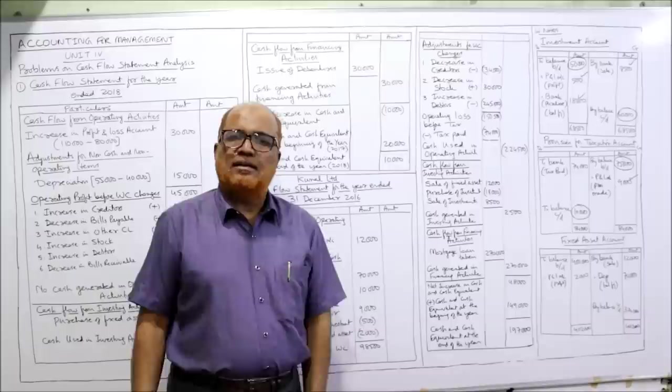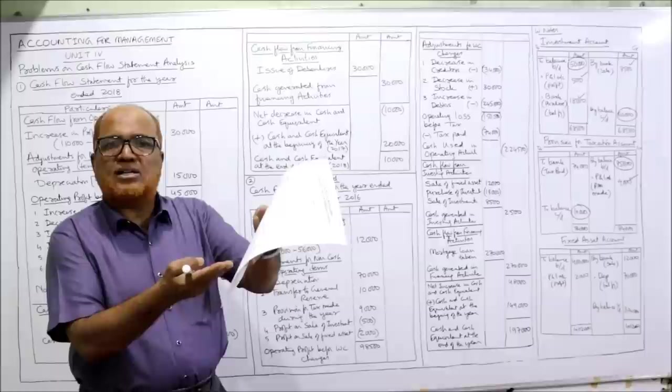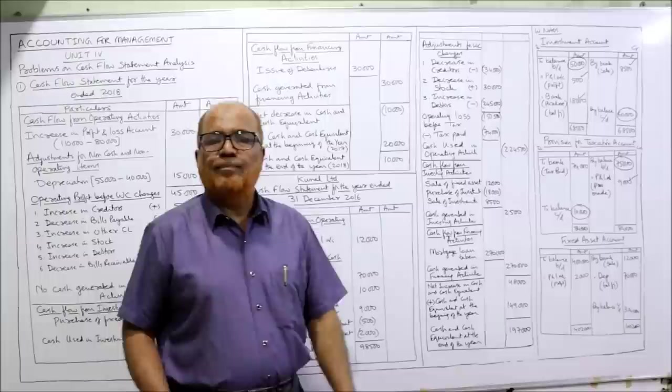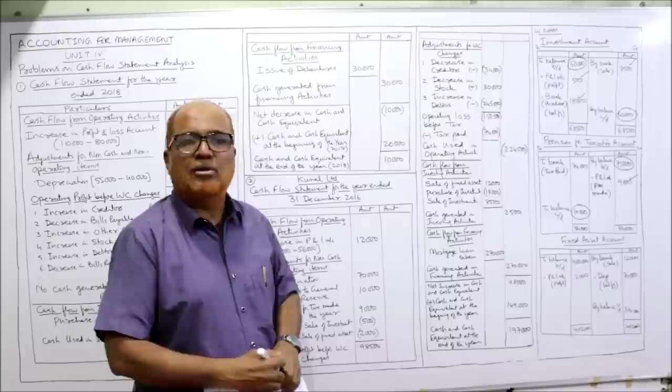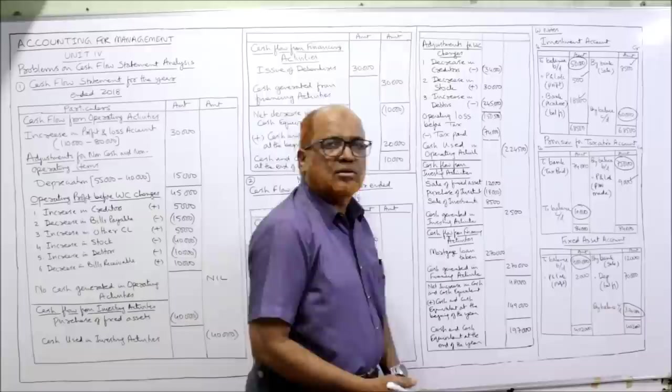Last working note: fixed asset account. We open this because an adjustment is given — during the year part of the fixed asset costing 10,000 was sold for 12,000. Fixed asset is an asset, so debit balance. Opening balance debit side, closing balance credit side. Opening balance: 4,00,000 on debit side. Closing balance: 3,20,000 on credit side.